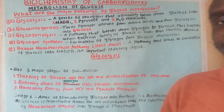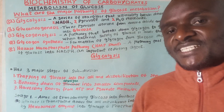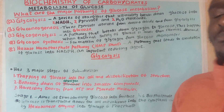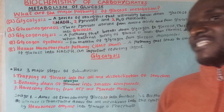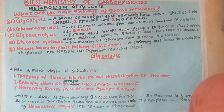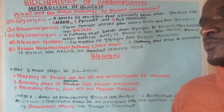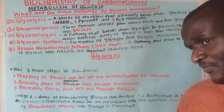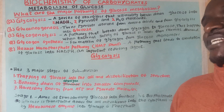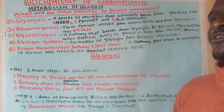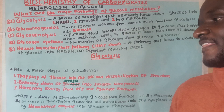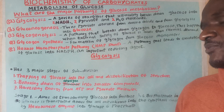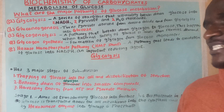So let's go to glycolysis. Glycolysis has three major stages of subdivision, as you can see here. Stage one is the trapping of glucose into the cell and the destabilization of the structure. The second step is the breaking down of glucose into smaller components. The third step is harvesting energy in the form of ATP and pyruvate molecules.